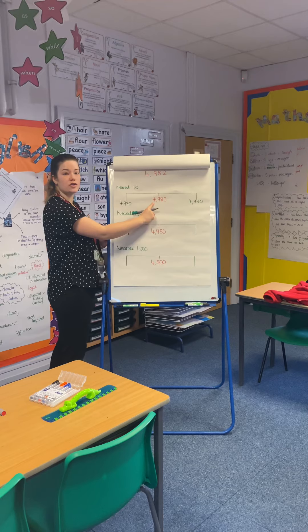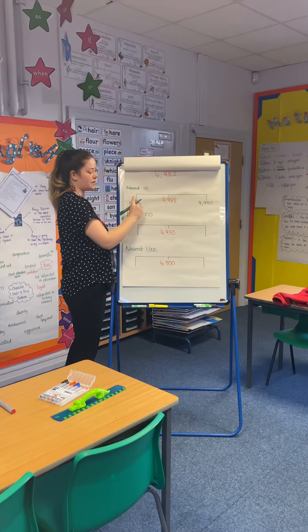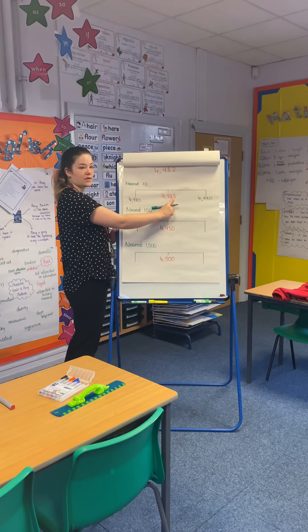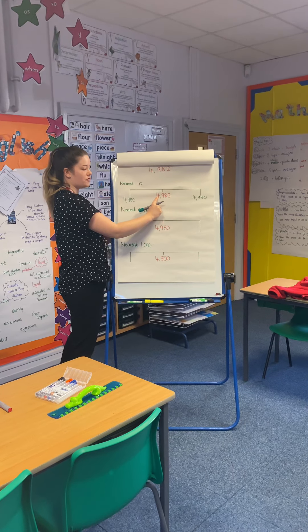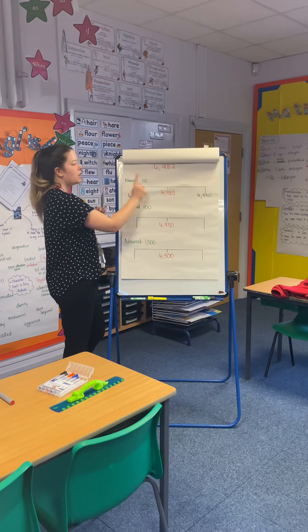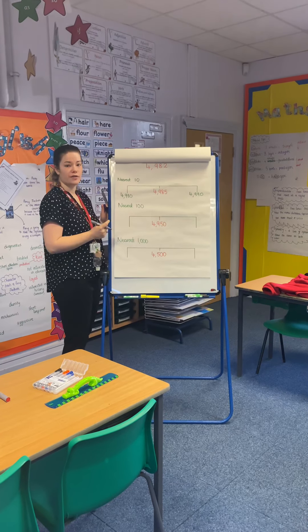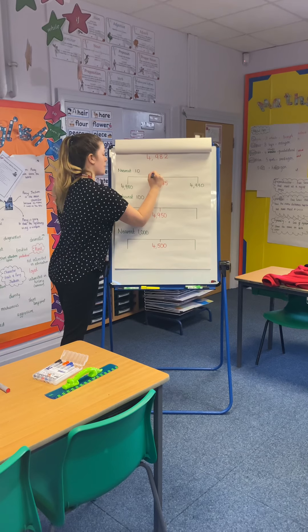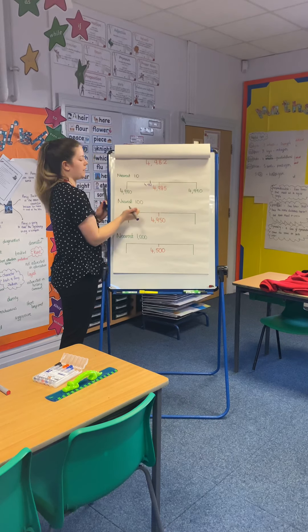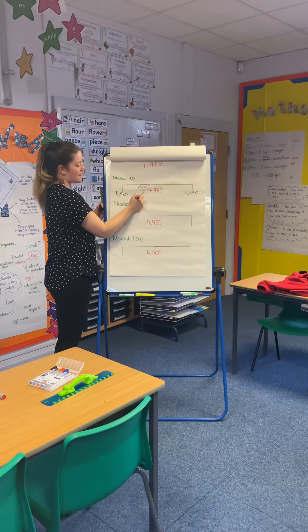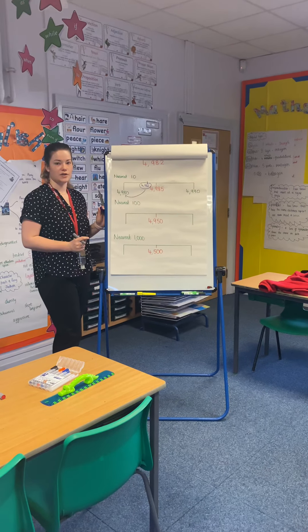I've marked the number that's in the middle, and that will help me to see whether I need to round up or round down. If my number is greater than 4,985, I need to round up. If my number is less than 4,985, I will need to round down. So we've got 4,982, and I can see that that is less than 4,985, so I would mark that around here on my number line. I can see that it is closer to 4,980 than it is to 4,990.